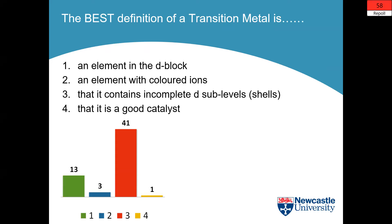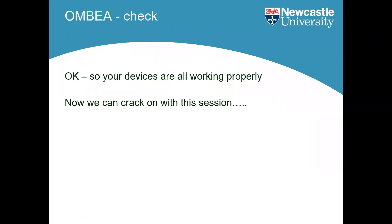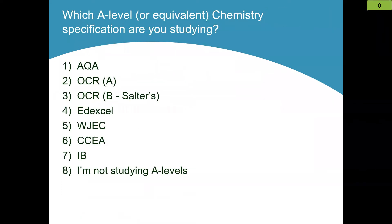The majority of you have gone for option three — that is the best answer. A transition metal contains an incomplete D sub-shell in either the element or one of its ions. Your other three statements are all correct, but they're not the definition of a transition metal.